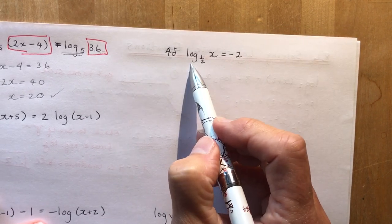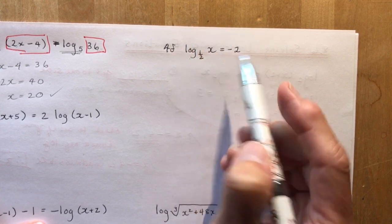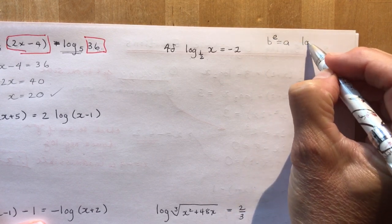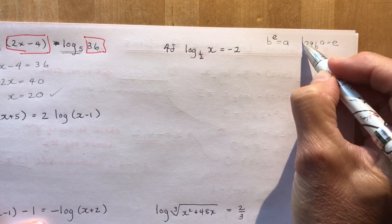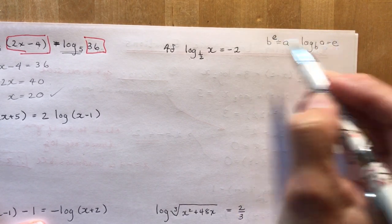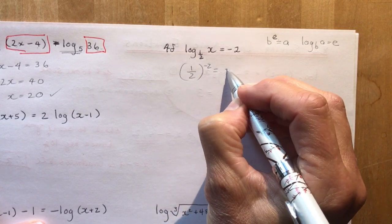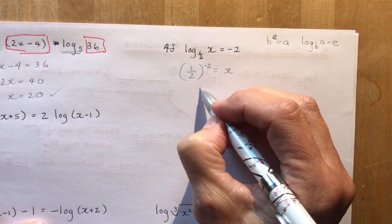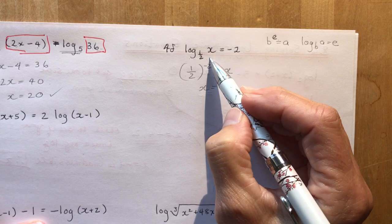Sometimes you can go directly to exponential form. If I write this in exponential form — remembering the base — one half to the minus 2 is equal to x. One half to the minus 2 is the same as 2 squared, so x equals 4. What do I raise one half to in order to get 4? Negative 2.